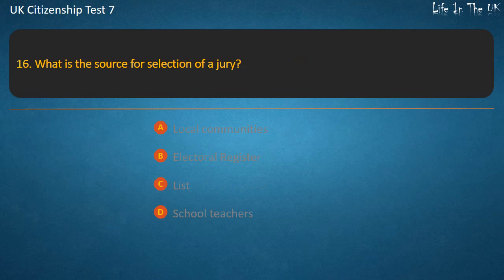Question 16: What is the source for selection of a jury? Options: Local communities, electoral register, list, school teachers. Answer: Electoral register.